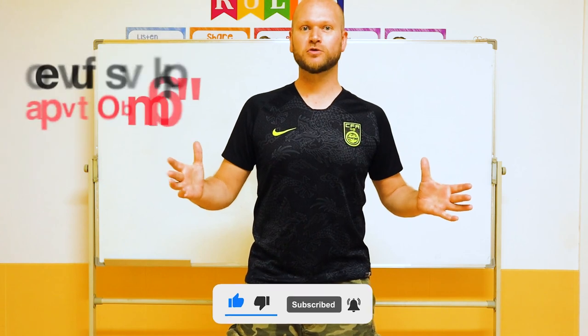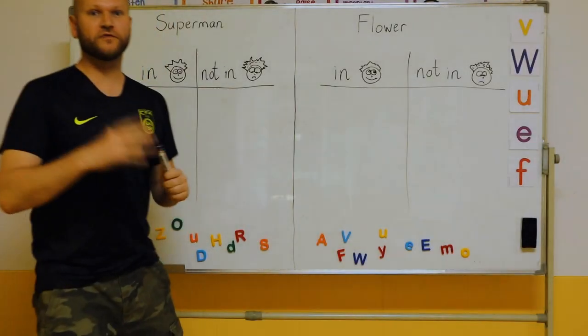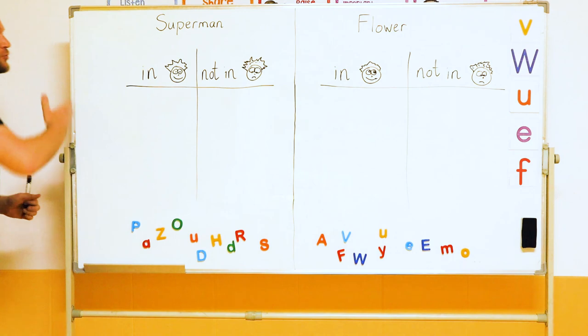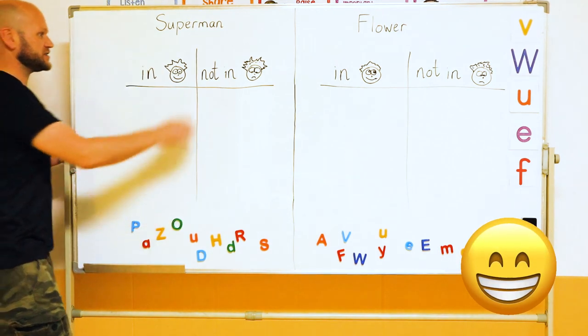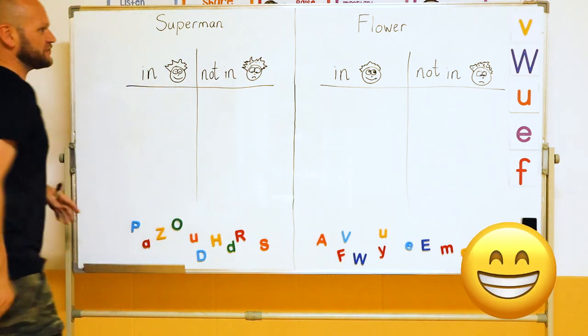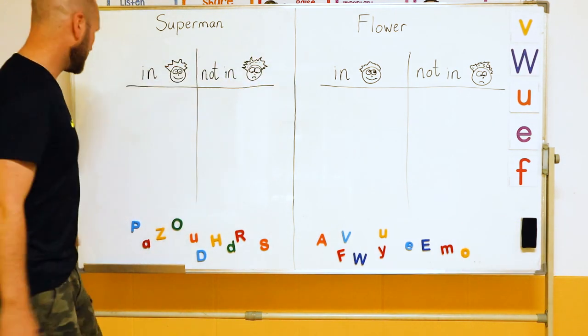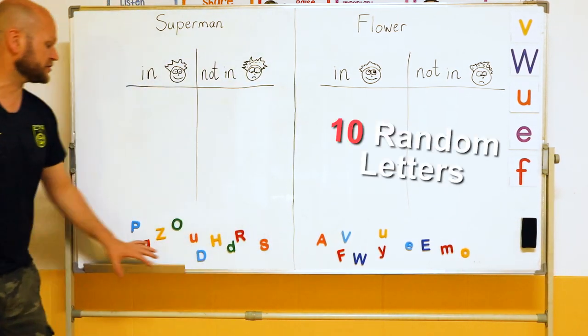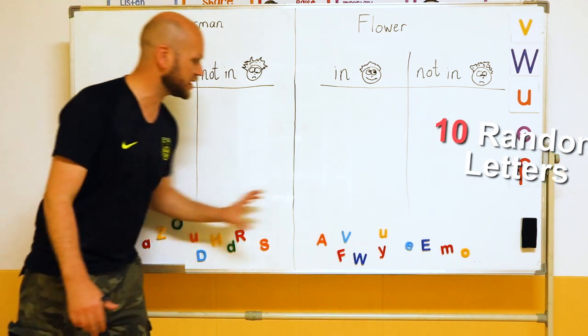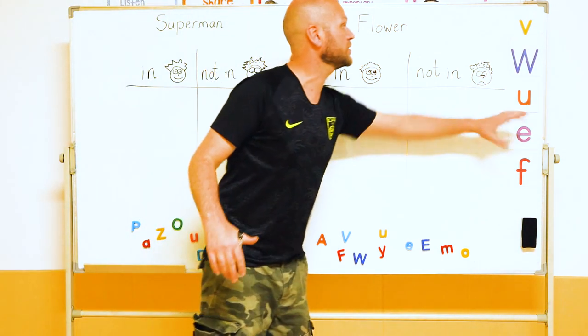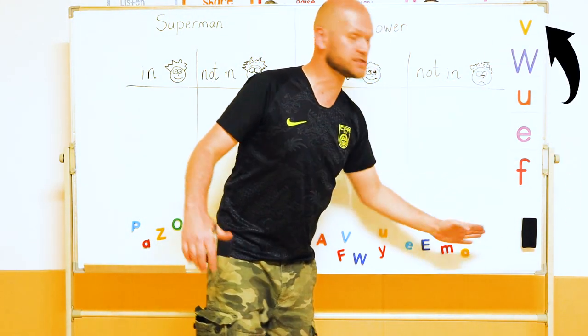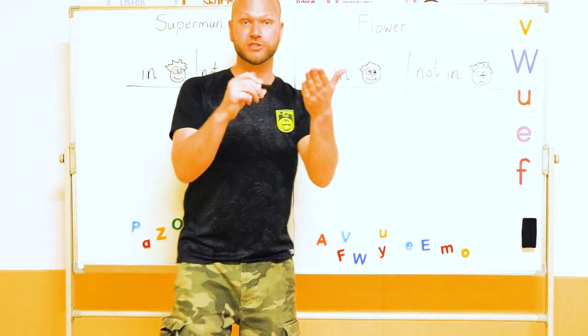This one is called Letters in Your Name. For this game you want to set your board up like this. So here we have In Happy Face, not In Sad Face. Same over here. Now I've chosen 10 random letters for this side and for this side. If you don't have these magnets, don't worry, just use something similar to this. You can even just write the letters yourself, put some magnets on the back.